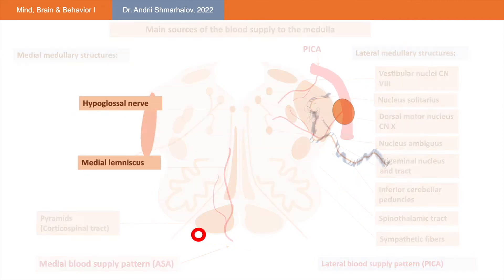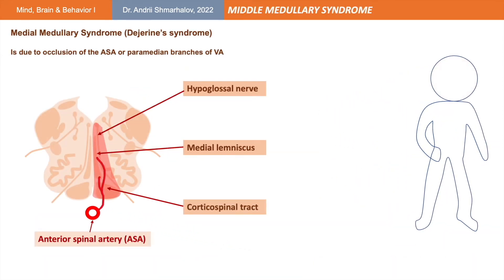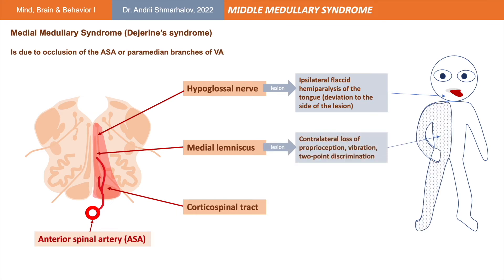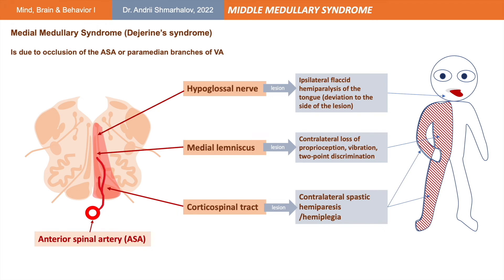So what we're going to see if there is an anterior spinal artery lesion: in this situation we are talking about the medial medullary syndrome, most likely developed due to the occlusion of the anterior spinal artery or paramedian branches of the vertebral artery. This lesion will involve the central structures of the medulla such as the hypoglossal nerve, damage of which may lead to weakness of the muscles of the tongue. The medial lemniscus involvement may lead to the contralateral loss of proprioception, vibration, and two-point discrimination from the body and limbs. The corticospinal tract involvement may lead to contralateral spastic paresis.